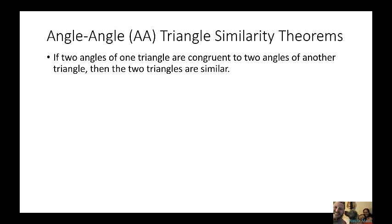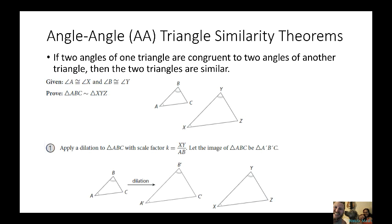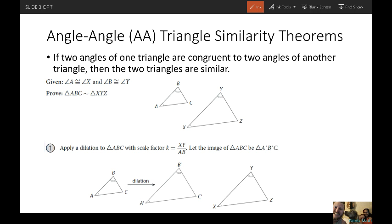First theorem: Angle-Angle Triangle Similarity Theorems. If two angles of one triangle are congruent to two angles of another triangle, then the two triangles are similar. So here's the basic proof. Make sure you write this down. You have two angles that are congruent. Let me just use the highlighter. We'll use green since it pops out. Basically you have this image, triangle ABC, and we're proving that it's congruent to triangle XYZ, the bigger triangle. So if you're told that angle A is congruent to angle X and that angle B is